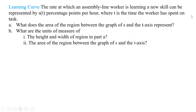All right, so now we are into some of the problems. The first one says the rate at which an assembly line worker is learning a new skill can be represented by S of T, in percentage points per hour, where T is the time the worker has spent on task. What does the area of the region between the graph of S and the T-axis represent?